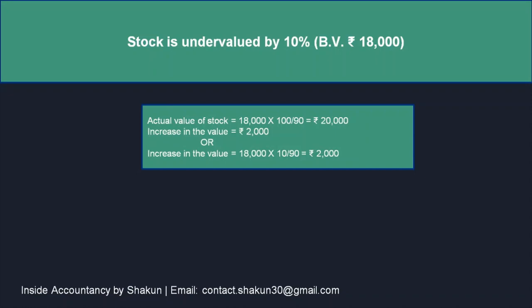To calculate the actual value of stock, we can't apply the percentage directly on 18,000. So we want to calculate the capitalized value of the increased stock, which will be equal to 18,000 × (100 / (100 − r)), that is 100/90, which gives us 20,000. That means the increased value of stock should be 20,000.